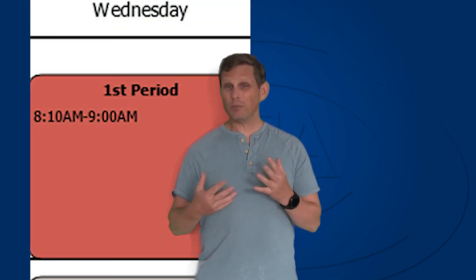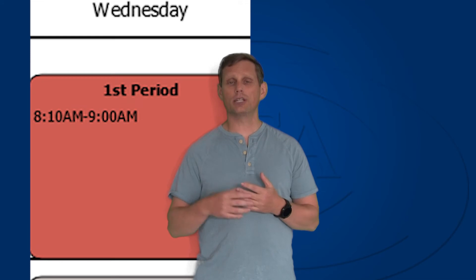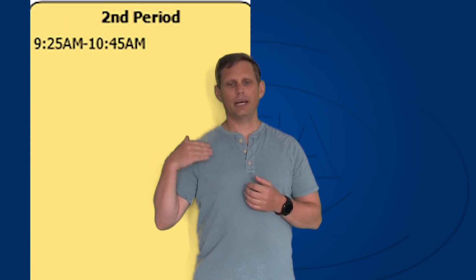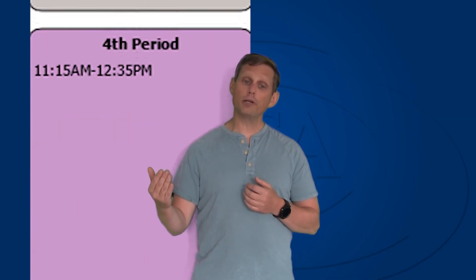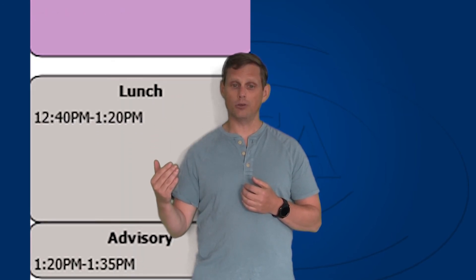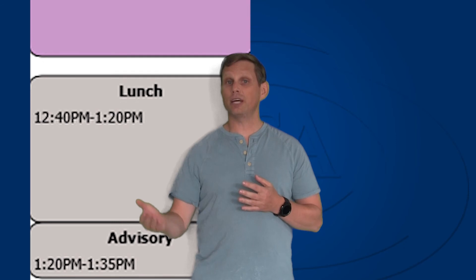Wednesday is going to look pretty much the same time-wise. We're just going to alternate those periods. So you'd start with first period, just like you did on Tuesday, and then a break. But then you'd go to second period, and then we'd have that assembly, and then you'd go to fourth period, and then we'd have lunch, and then we'd have advisory, and then we'd have seventh period.